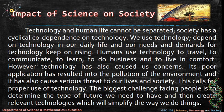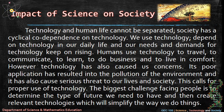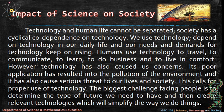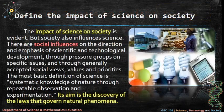Technology and human life cannot be separated. Society has a cyclical co-dependence on technology — we use and depend on technology in our daily life, and our needs and demands for technology keep rising. Humans use technology to travel, communicate, learn, do business, and live in comfort. However, technology has also caused concerns: its poor application has resulted in pollution of the environment and serious threats to our lives and society. This calls for proper use of technology. The biggest challenge facing people is to determine the type of future we need and then create relevant technologies to simplify the way we do things.